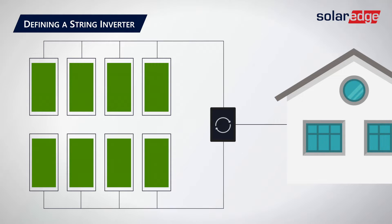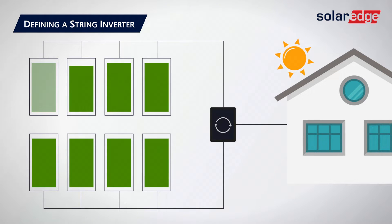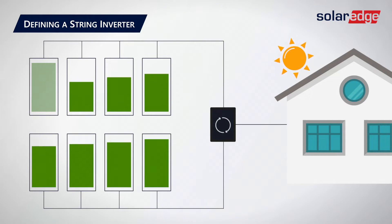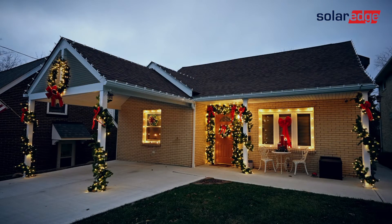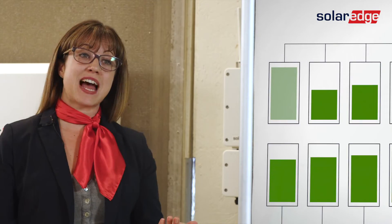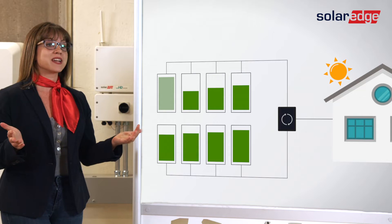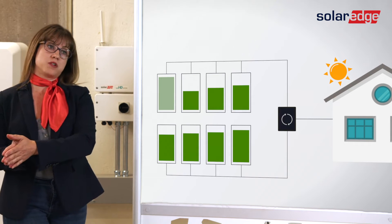With a string inverter, all solar modules on that string are dependent on one another, which means if one module in that string is shaded, the other modules in that string also underproduce. Remember when you were a kid and your dad was putting up holiday lights, and when one bulb went out, the entire string went dark? That's what's happening in a string inverter system.